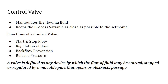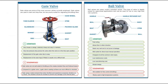Now let us look at the types of control valves and discuss all of them in detail. The first type is the gate valve. Gate valves are some of the most common valves currently employed. Gate valves are used to start and stop flow but are poorly suited for regulating or throttling the flow. The different parts of a gate valve include the yoke sleeve, gland bush, bonnet, disc, seat gasket, packing gland, stem, and hand wing.